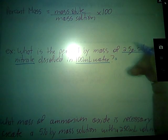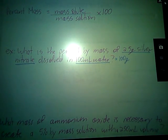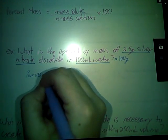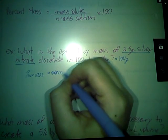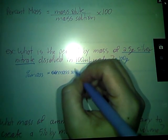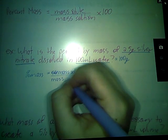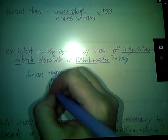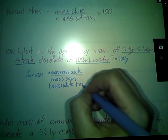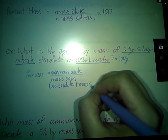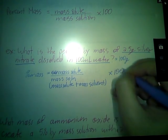So 100 milliliters of water is the same thing as 100 grams. So percent mass, we're looking for mass solute divided by mass of solution, which is going to be mass solute plus mass solvent. And then we're going to multiply the whole thing by 100.